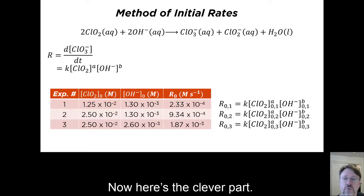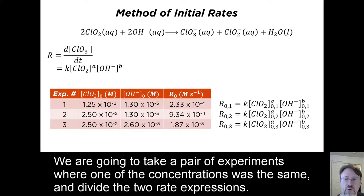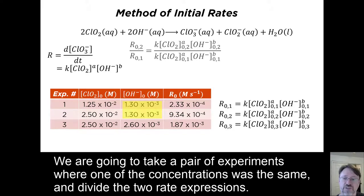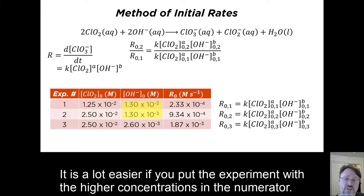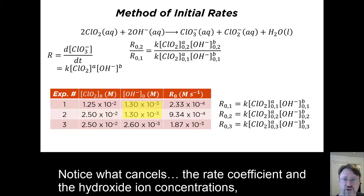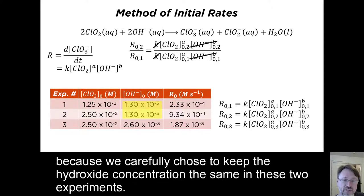Now here's the clever part. We're going to take a pair of experiments where one of the concentrations was the same, and divide the two rate expressions. It's a lot easier if you put the experiment with the higher concentrations in the numerator. Notice what cancels. The rate coefficients and the hydroxide ion concentrations, because we carefully chose to keep the hydroxide concentration the same in these two experiments.